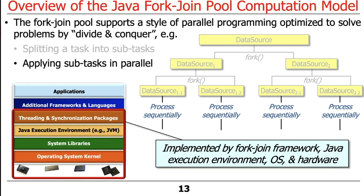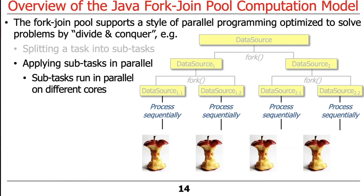This is implemented using a combination of things: the ForkJoin Framework itself, the Java Virtual Machine, operating system threads, and typically a pool of threads. Eventually this gets mapped down to hardware cores, which are really doing the heavy lifting to run things in parallel. Assuming you're on a multi-core processor, the subtasks will run in parallel on different cores — each core sequentially processes a subtask, but taken together, all cores process all subtasks in parallel.